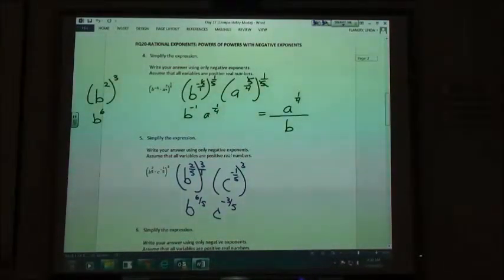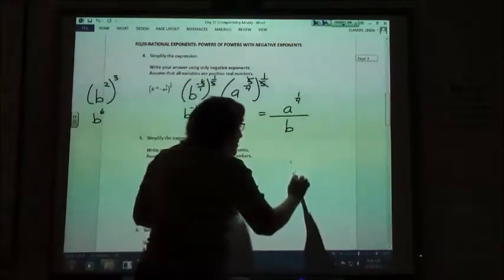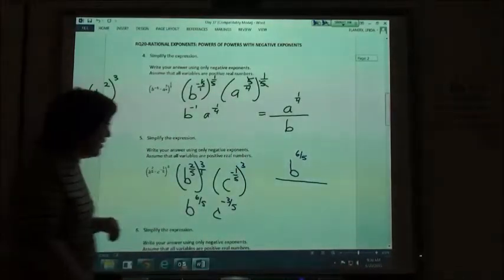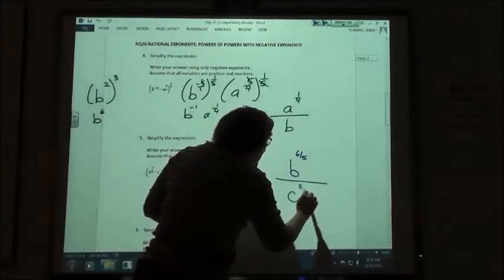So c to the negative three-fifths. And again, we have one that has a negative exponent, so we've got to rewrite our answer. b to the six-fifths over c to the three-fifths.